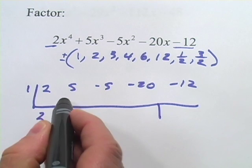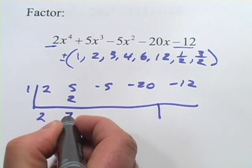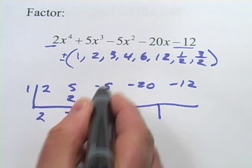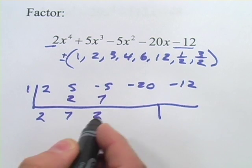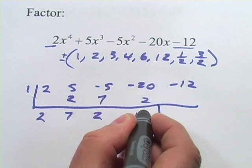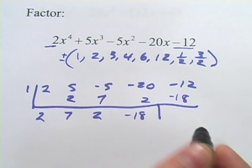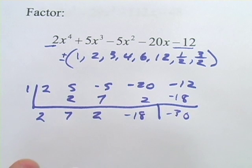So I start by pulling the 2 down. Multiply. 1 times 2 is 2. I get 7 there when I add. 1 times 7, 7. Add those, I get 2. 1 times 2 is 2. Here I get negative 18. 1 times negative 18, negative 18. And I end up with negative 30 here, which is not 0.